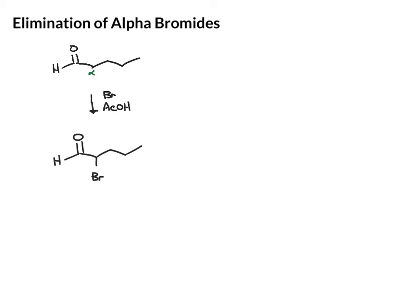Now, once we have this alpha bromide, if you treat it with a base like pyridine and heat it up a little bit — don't forget the structure of pyridine, you have the nitrogen with the lone pair — what this does is an elimination reaction. And if you think back to organic 2, you might remember the E2 elimination.